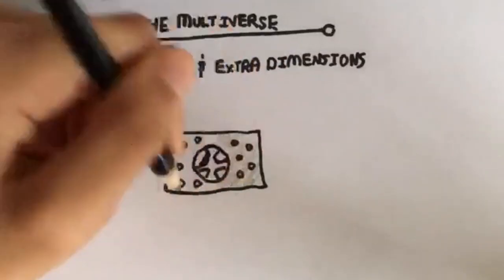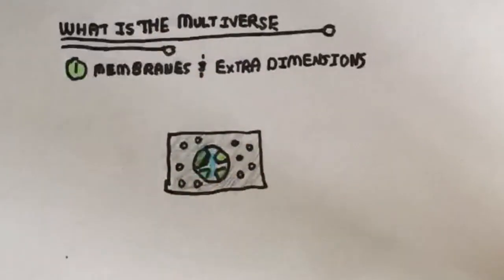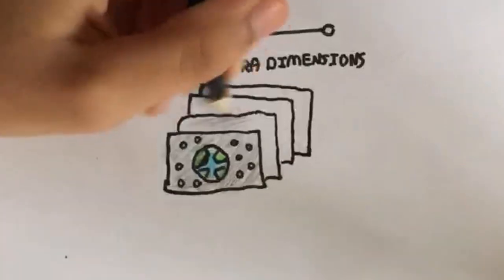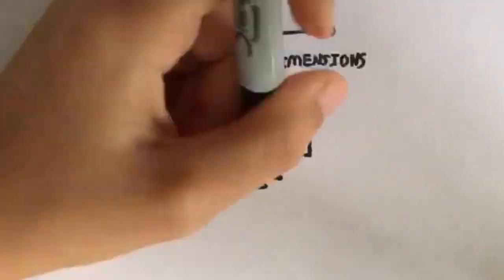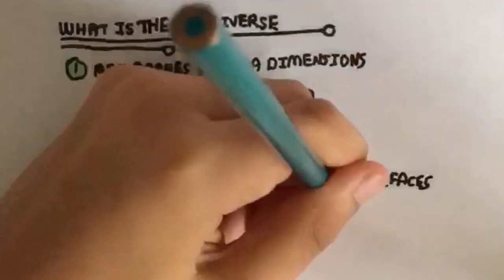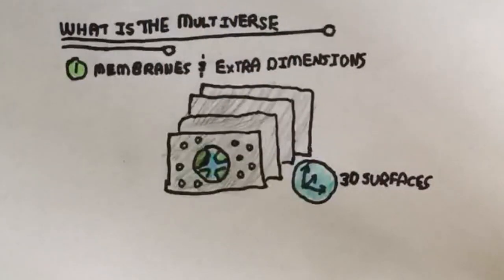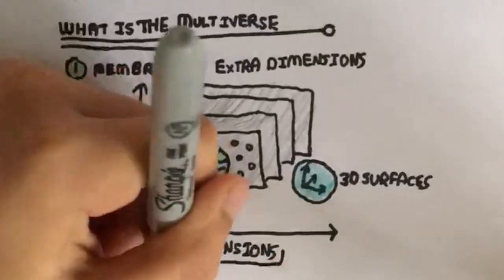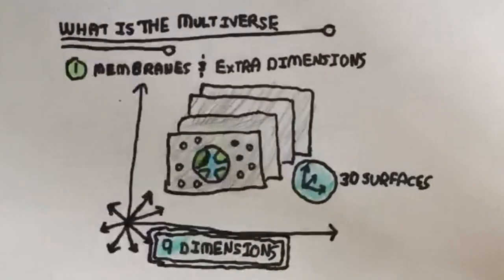One of these three primary models suggests extra dimensions in addition to membranes. Numerous string theorists provide the hypothesis that what we perceive as our universe is simply a three-dimensional surface, or membrane, that is within a true universe which consists of nine dimensions, unimaginable to the human brain.